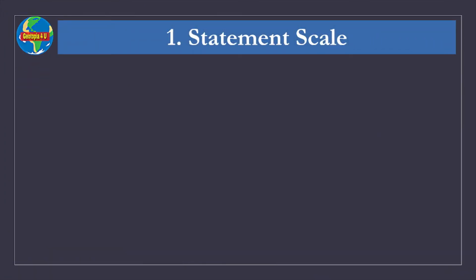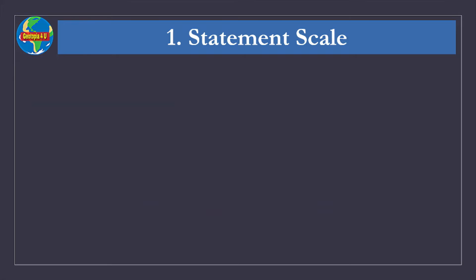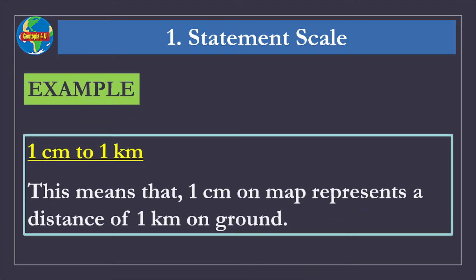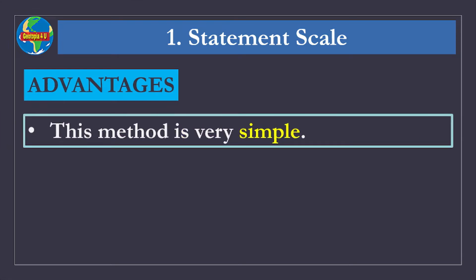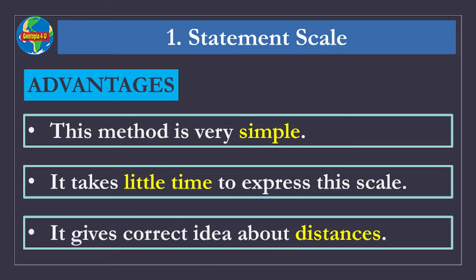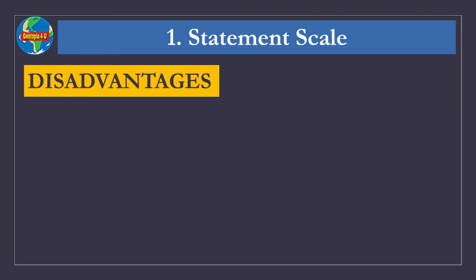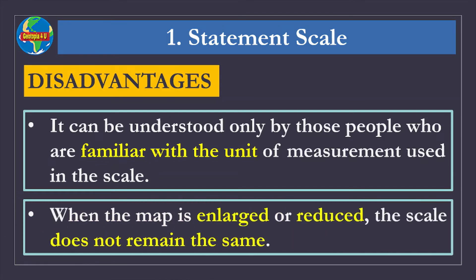Statement scale: In this method, we express the scale in words or make a statement about it. An example of the scale is 1 cm to 1 km. This means that 1 cm on map represents a distance of 1 km on ground. Advantages: This method is very simple, it takes little time to express the scale, and it gives a correct idea about distances. Disadvantages: It can be understood only by those people who are familiar with the unit of measurement used in the scale. When the map is enlarged or reduced, the scale does not remain the same.